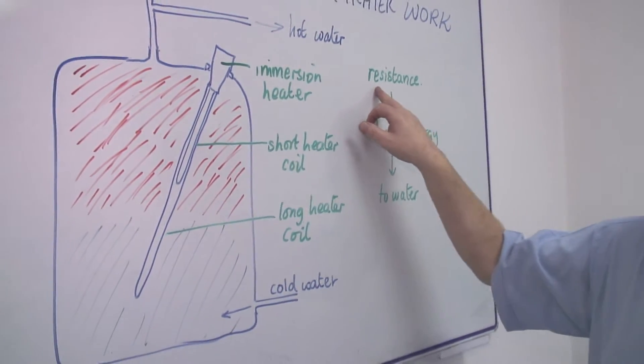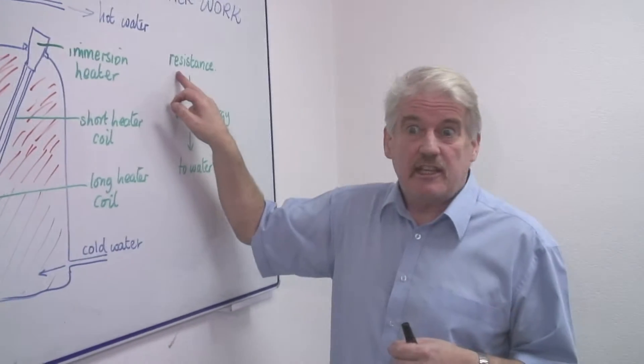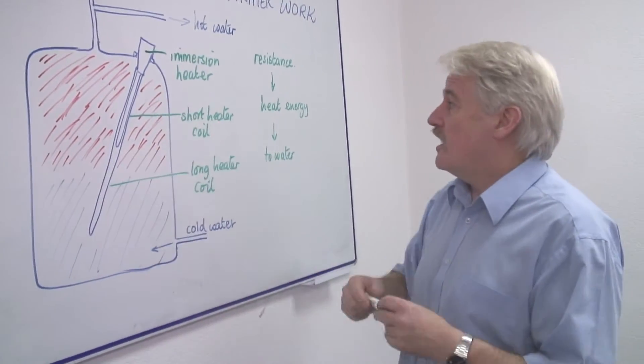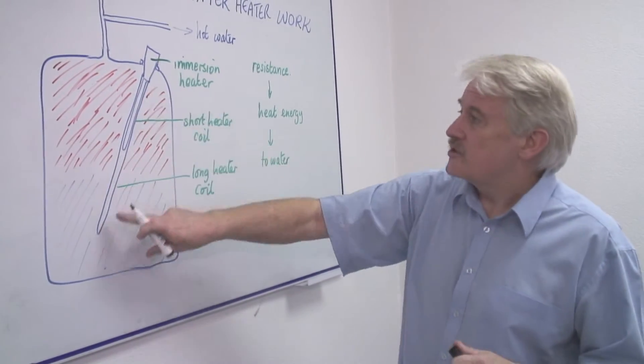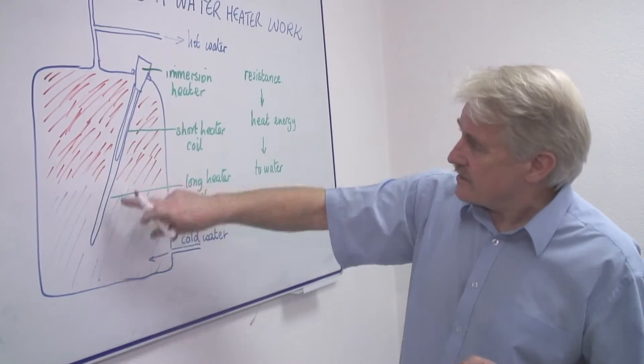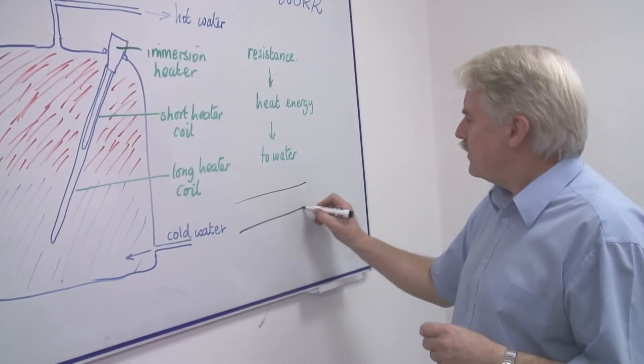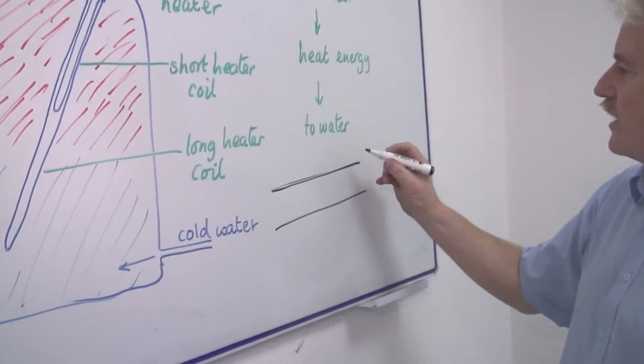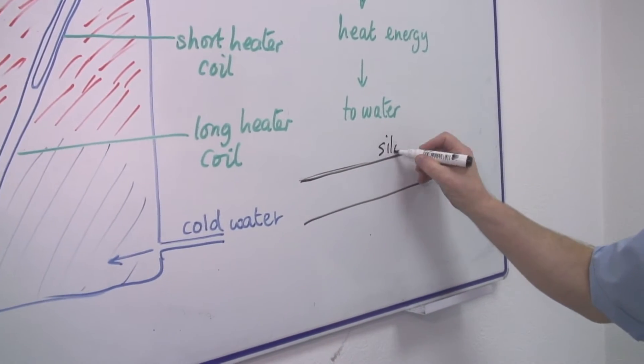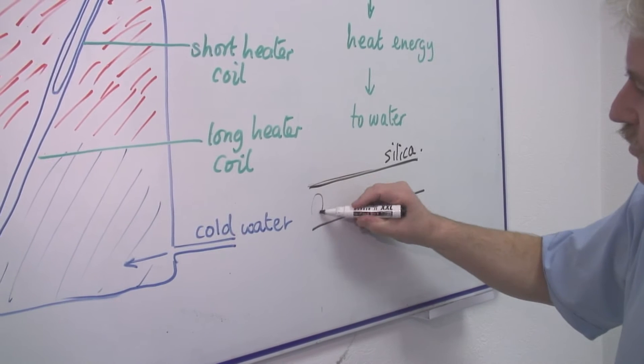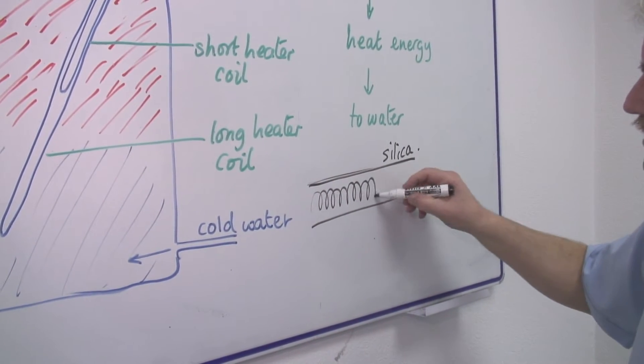Now the most important thing of course is that the electricity doesn't get into the water. So the actual element of the heater, that's this blue thing here, is a tube. The tube on the outside is silica and inside you have the coil which gets hot.